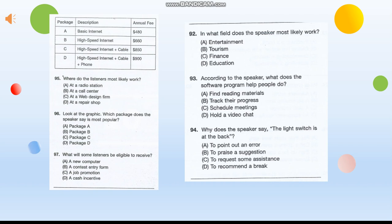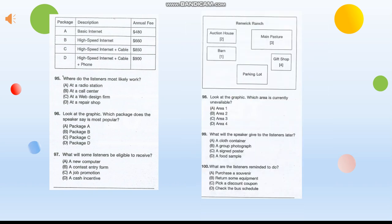Number 95. Where do the listeners most likely work? Number 96. Look at the graphic. Which package does the speaker say is most popular? Number 97. What will some listeners be eligible to receive?